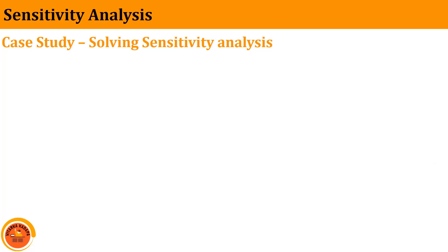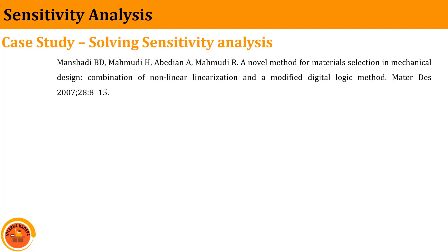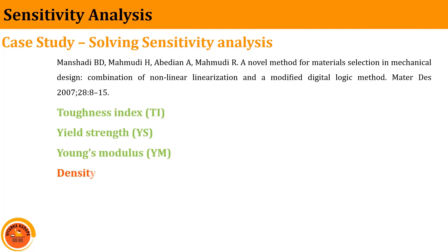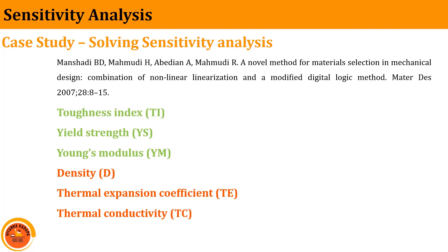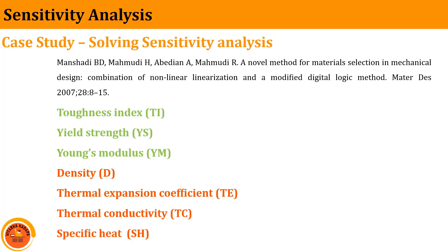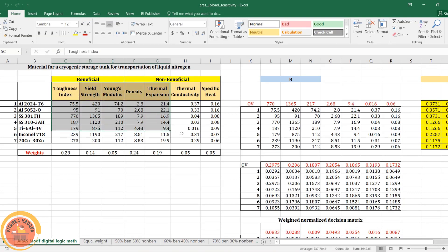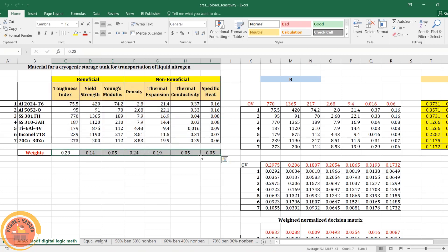Let me take a case study where our objective is to select a material for a cryogenic tank application. The attributes consist of toughness index, yield strength, Young's modulus as beneficial attributes, and density, thermal expansion coefficient, thermal conductivity, and specific heat as non-beneficial attributes. I have already applied the ARAS method — the Additive Ratio Assessment method — to this same problem. The decision matrix has been collected from a reference, and the weights were estimated using the Modified Digital Logic method.